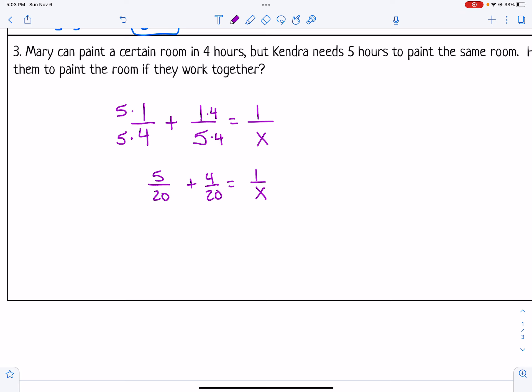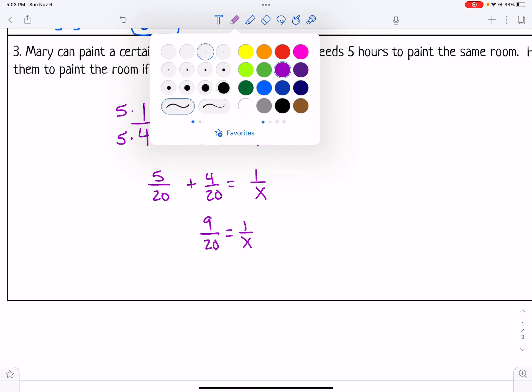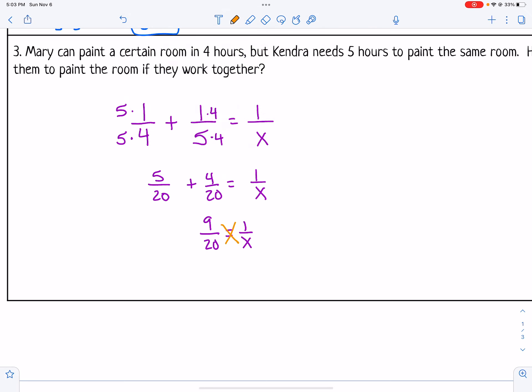Then I can add these together. So I get 9 over 20 equals 1 over x. And then I'm able to go ahead and cross multiply. So I get 9x equals 20. And then divide by 9. So x equals 20 over 9 would be my solution.